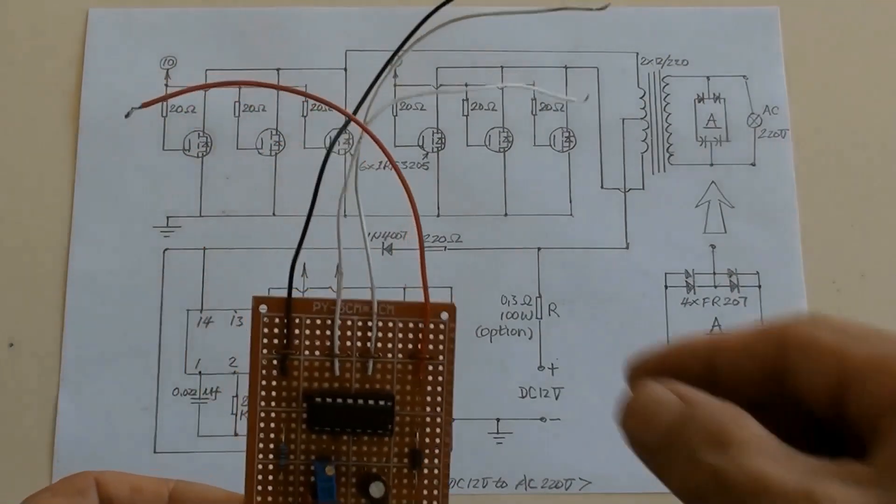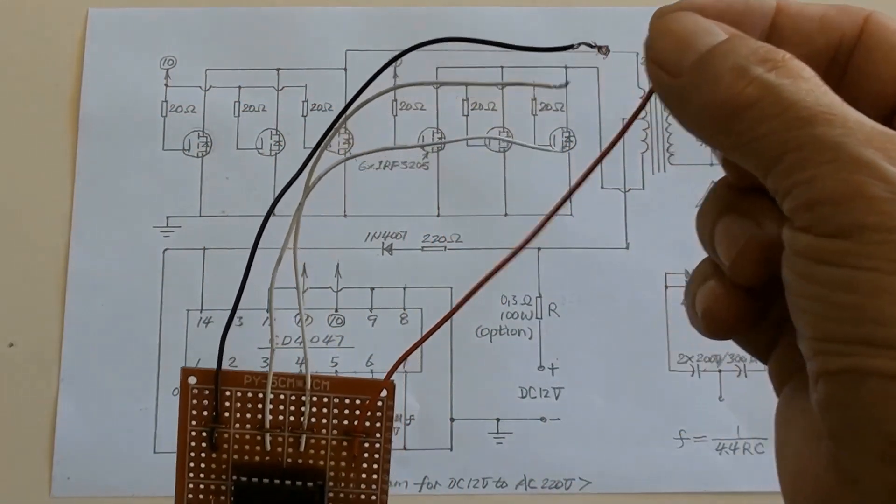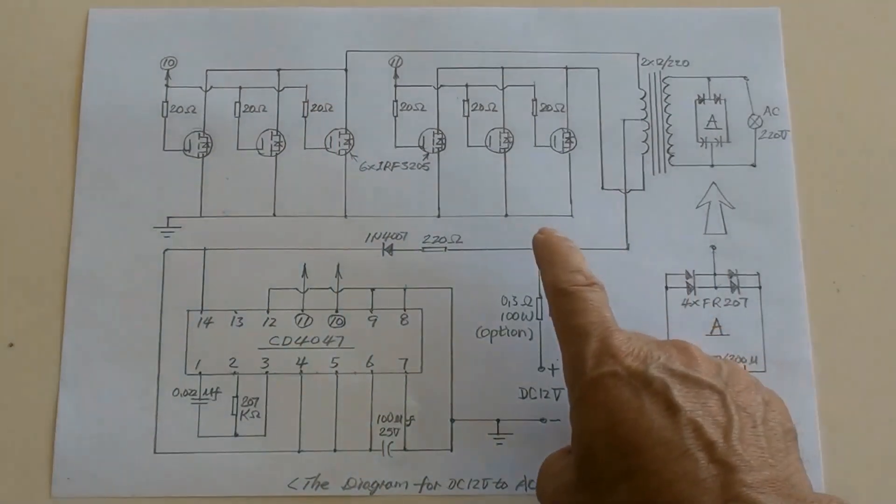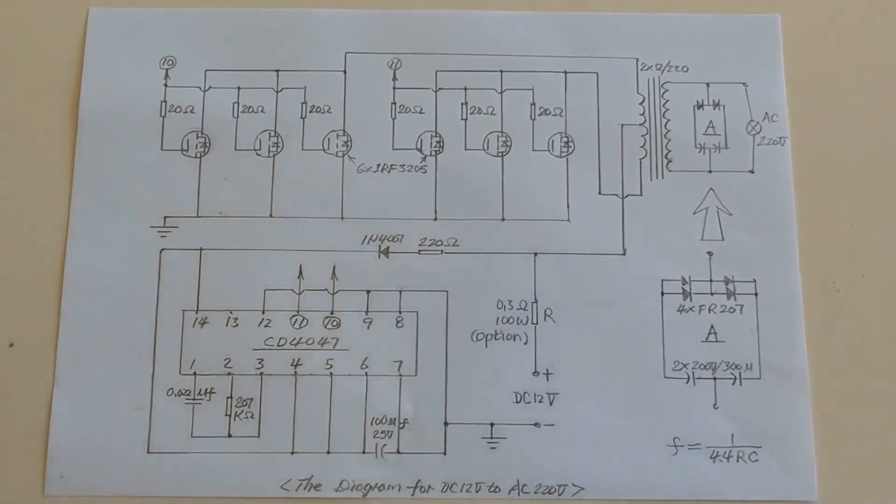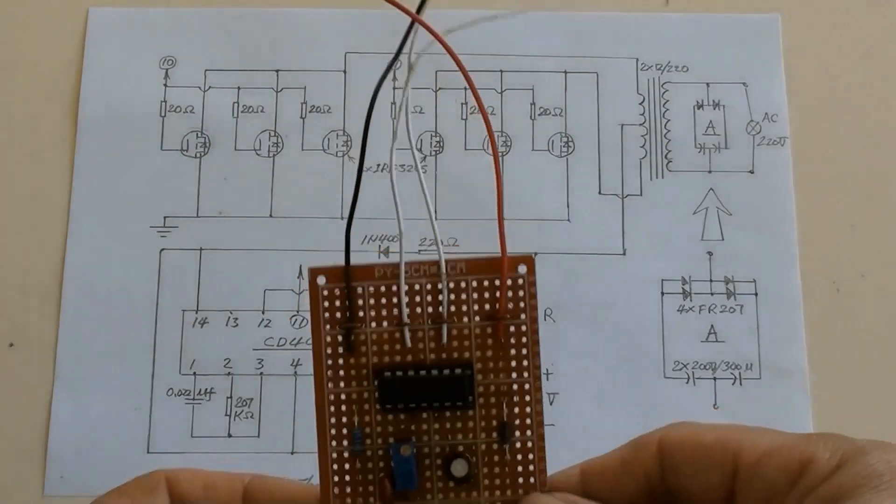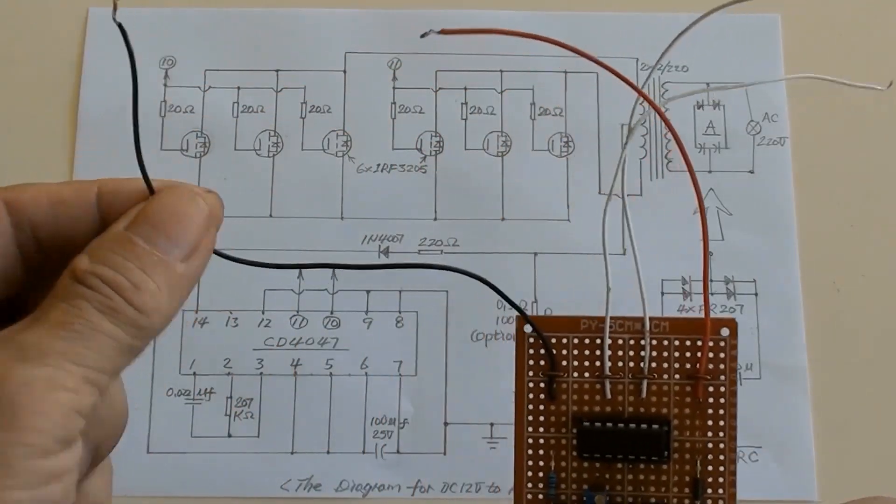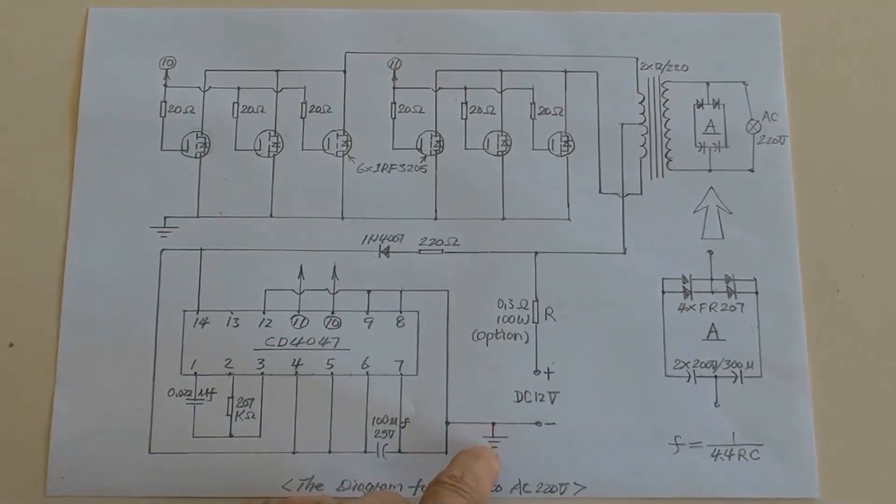The red wire is for the IC frequency generator, or call it as oscillator's DC power positive wire, located this section in the circuit. The black wire is for the oscillator's negative, or call it as earth wire, and here.